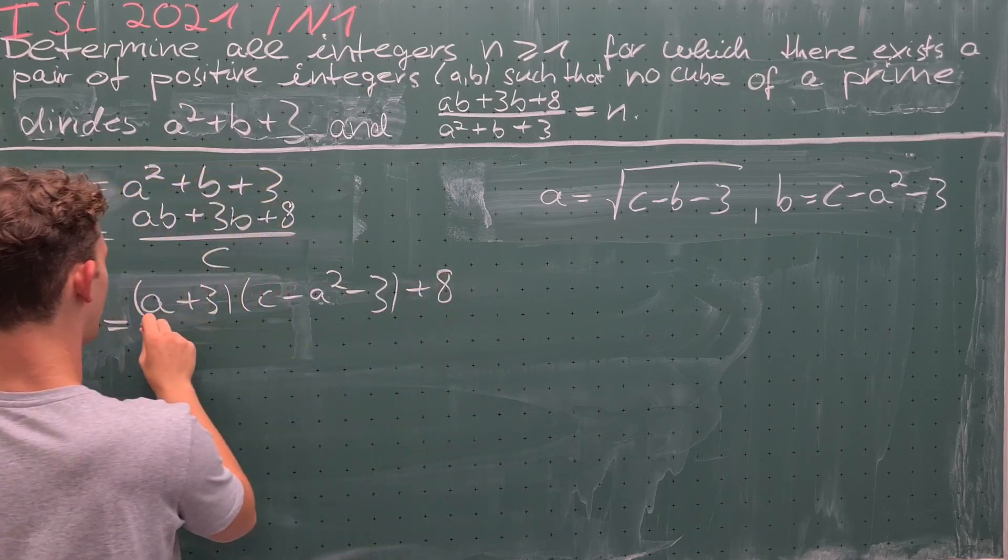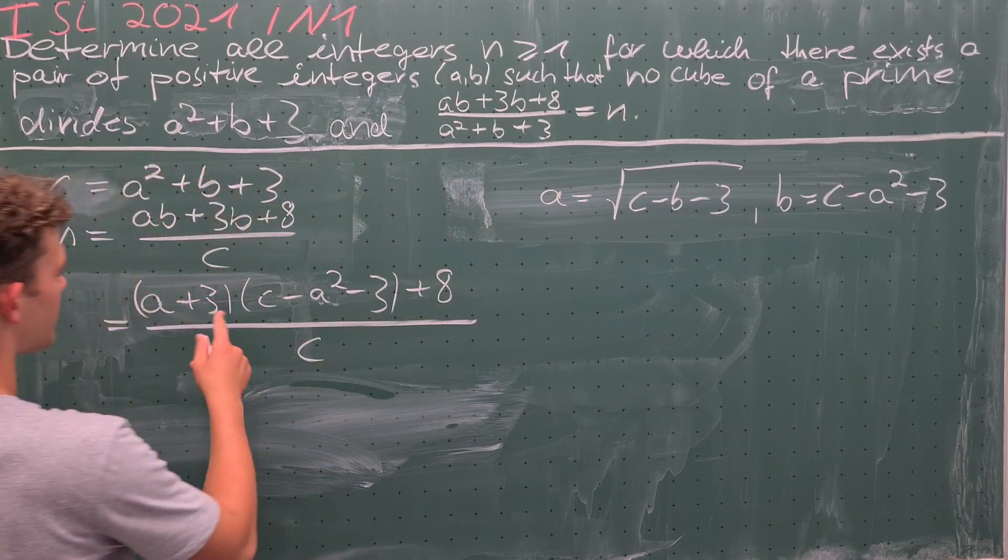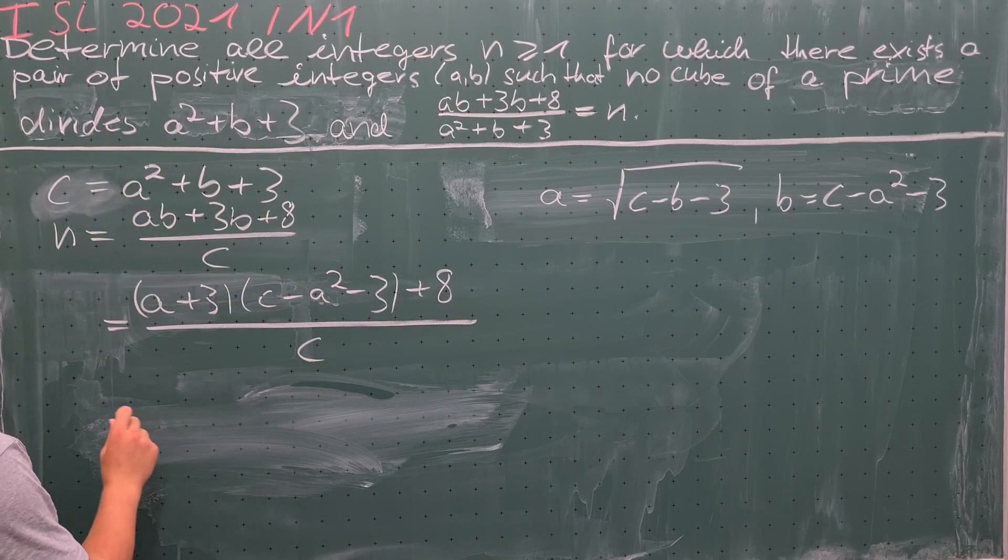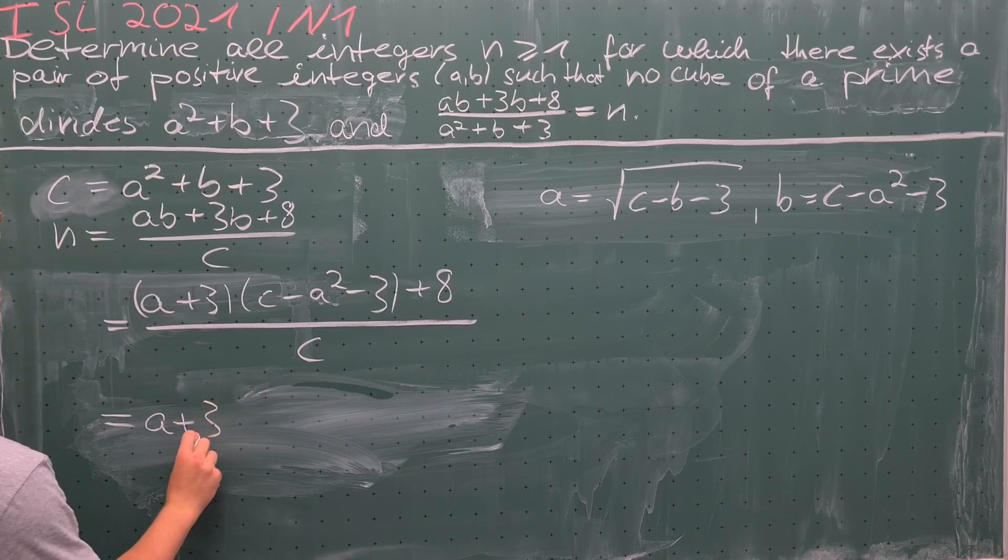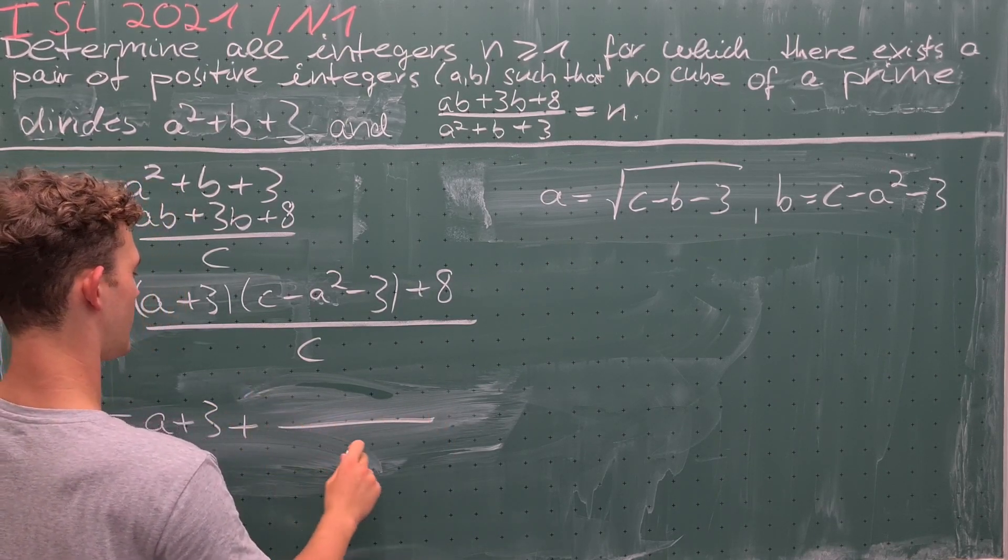all divided by c. Now we simplify this fraction. a + 3 times c over c is just equal to a + 3,